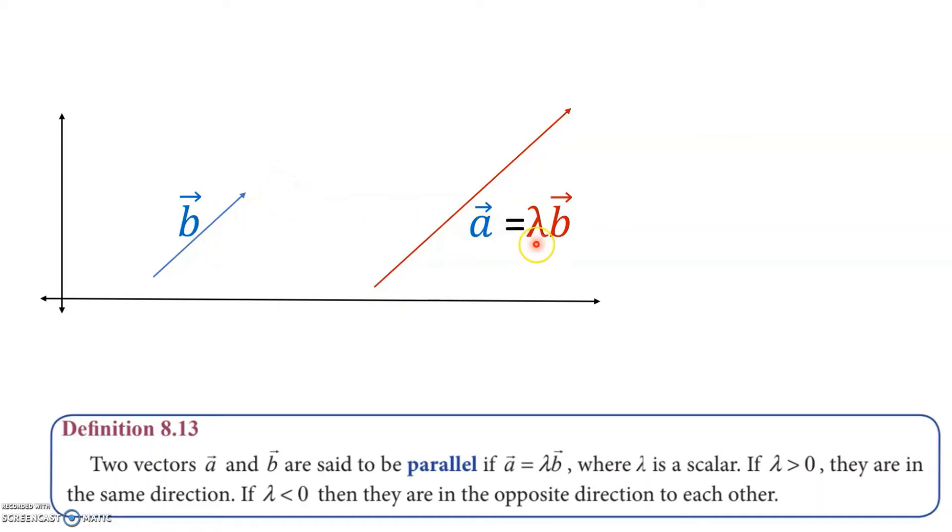But if λ is less than zero, then the direction will automatically change, because multiplying vector b with a minus will reverse the direction of this vector. In scalar multiplication, λ will either keep the vector in the same direction or reverse the direction.